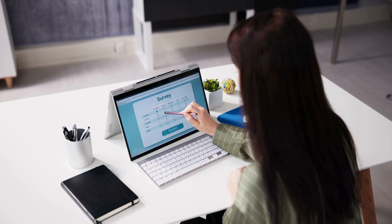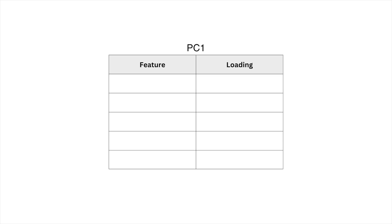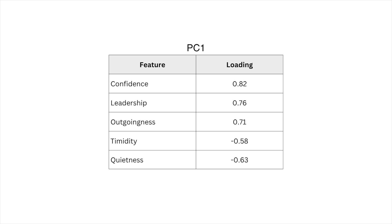If a feature has a high positive or negative loading, it means that feature plays a big role in shaping that component. For example, if you're analyzing survey data and PC1 has high positive loadings for confidence, leadership, and outgoingness, and low loadings for things like timidity and quietness, then PC1 might be capturing a kind of extraversion-like pattern, even if PCA didn't explicitly label it that way. So while the principal components themselves may seem abstract, looking at the loadings gives you a window into what each component might be representing in terms of the original data.